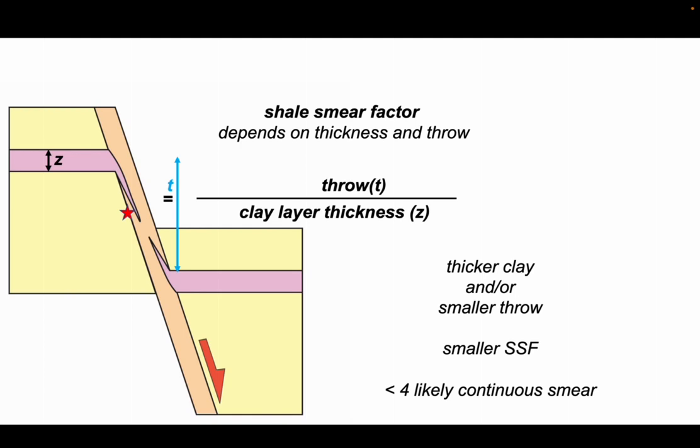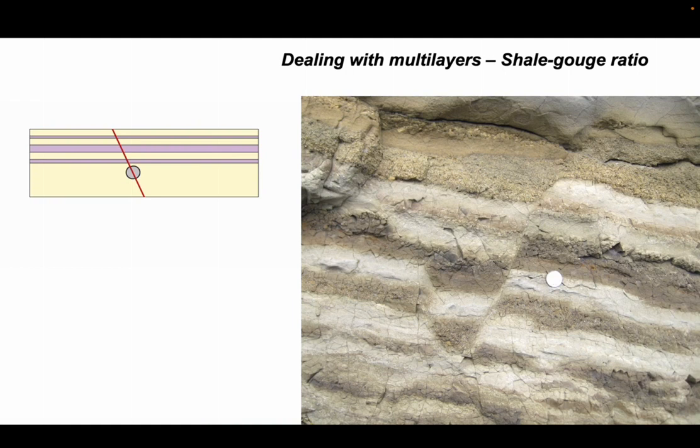The shale smear factor works really well for single shale layers, but most sedimentary successions of course have got multiple shale or clay layers within them, such as here. So how do we deal with multi-layers? Well, this is where an alternative parameterization comes in: the shale gouge ratio.